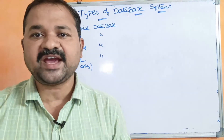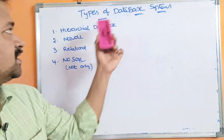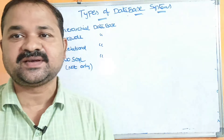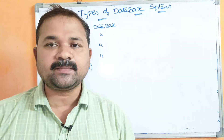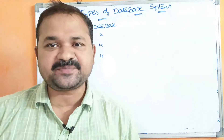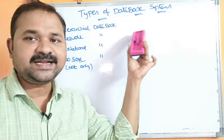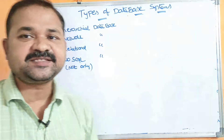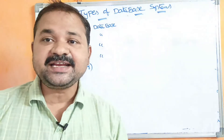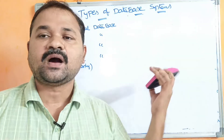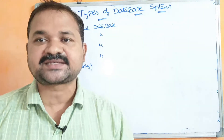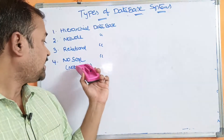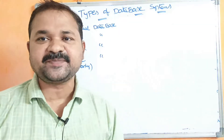In this video, we are going to discuss types of database systems or database management systems. We can classify databases mainly into four types: the first one is hierarchical database management system, second is network database management system, third is relational database management system, also called RDBMS, and the last one is NoSQL database management system.